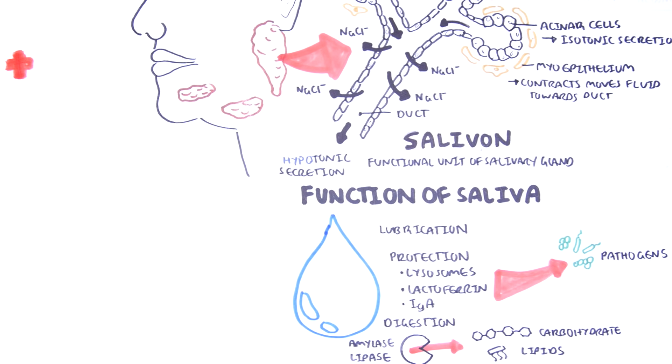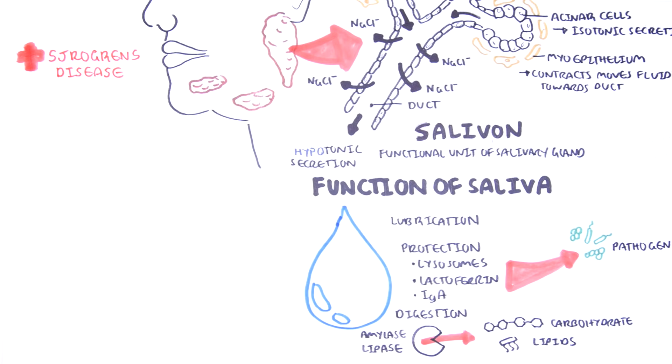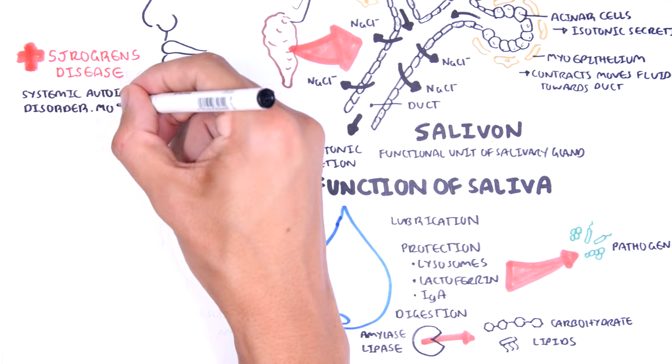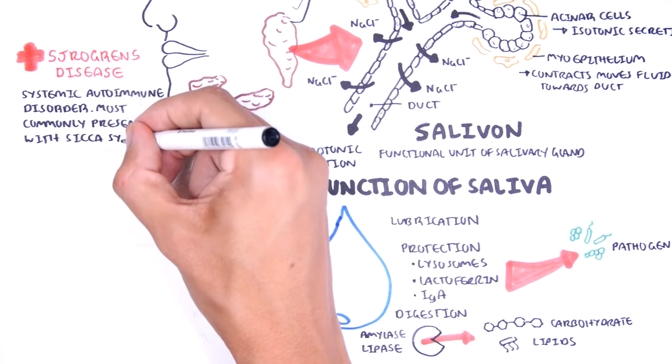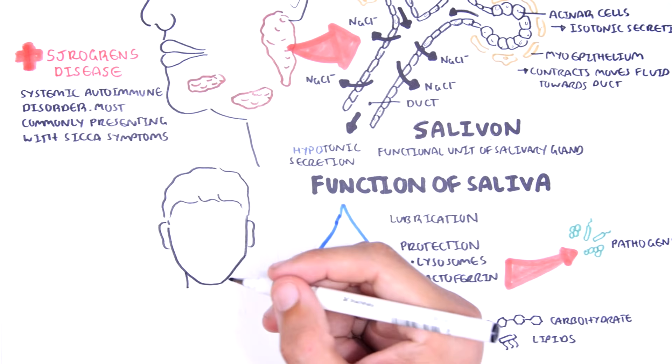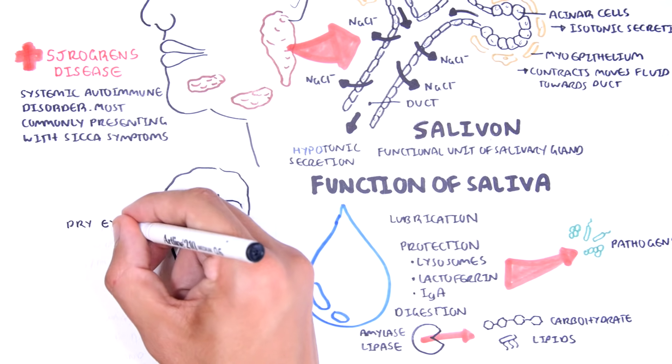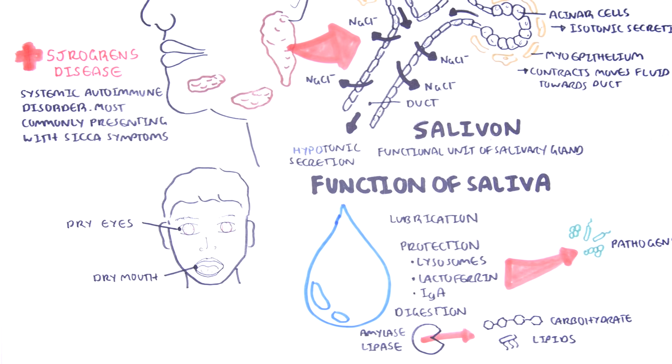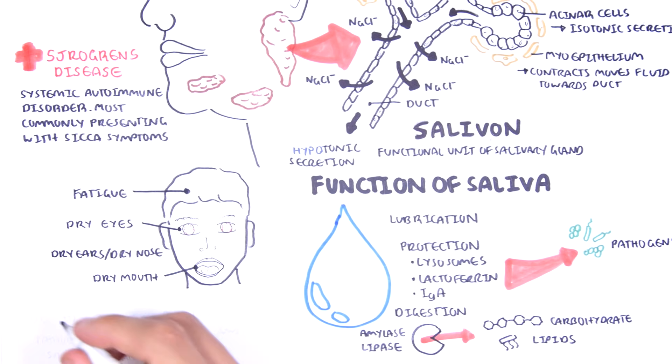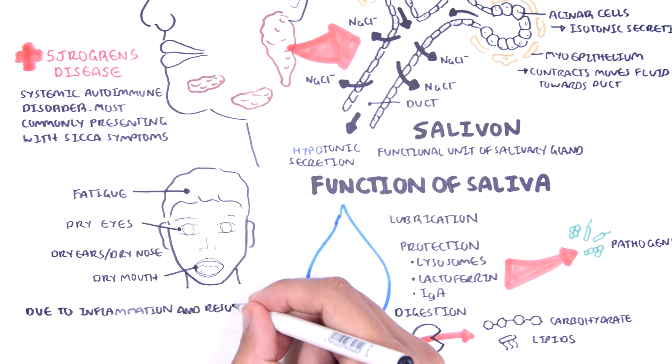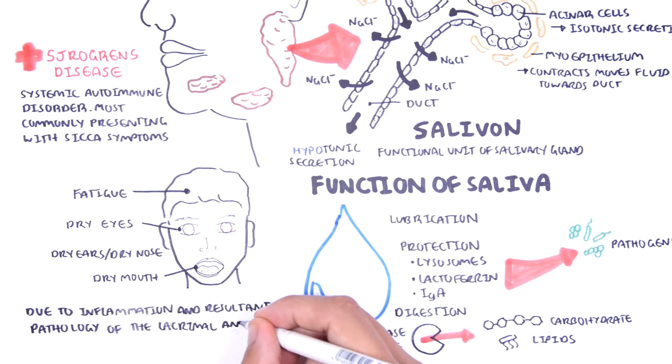Some clinical anatomy: Sjogren's disease is a systemic autoimmune disorder most commonly presenting with sicca symptoms. Sicca refers to dryness most often involving the eyes, mouth, ears, and even nose, all of which are due to inflammation and resultant pathology of the lacrimal and salivary glands.